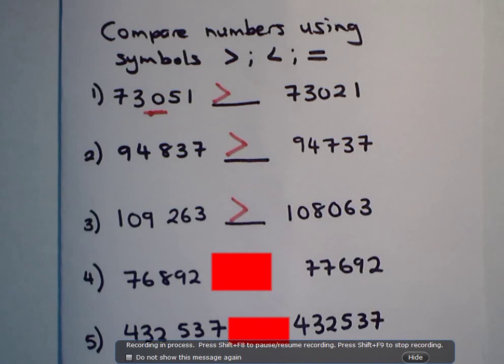Then you have 76,892 and you have 77,692. Now, which one is the bigger number? Now, if you look here, the bigger number is on the right-hand side.